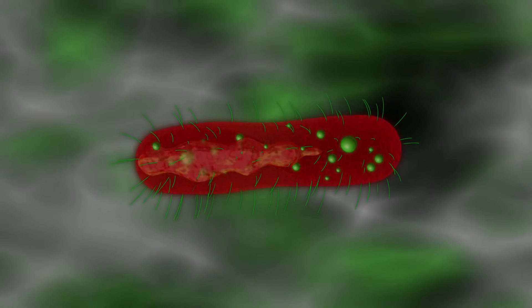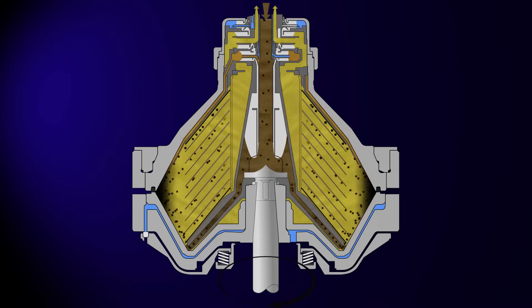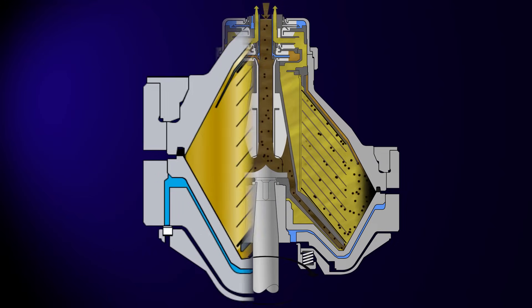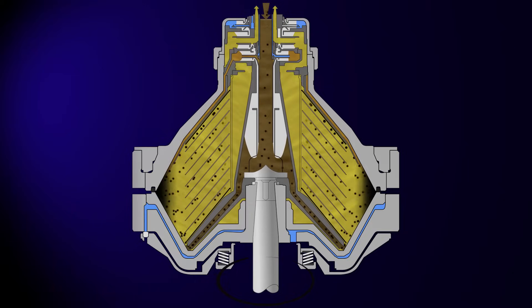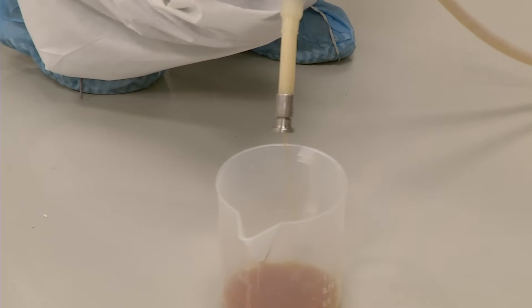The solids are the E. coli cells and they contain the product. When the bowl has reached capacity for solids, the bowl opens and the solids are discharged into an appropriate container for collection. Once the solids are discharged, the centrifugation step can resume, while the clarified liquid is waste.